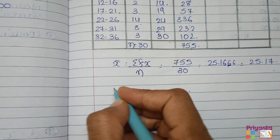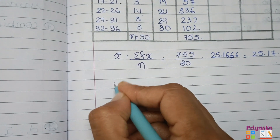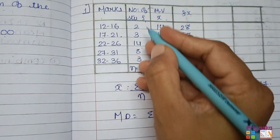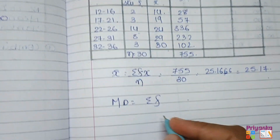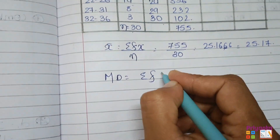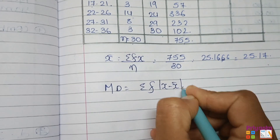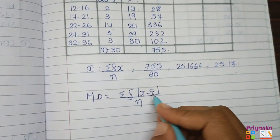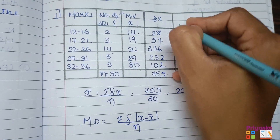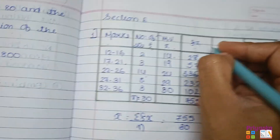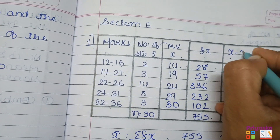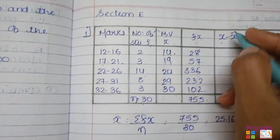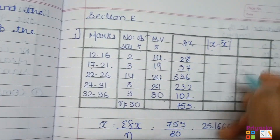Dividing 755 by 30, we get the mean as 25.17. Now write down the mean deviation formula: sigma f |x minus x̄| upon n. The next column we will find is |x minus x̄|, calculated in absolute brackets, so there is no negative marking in this column.